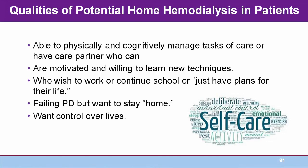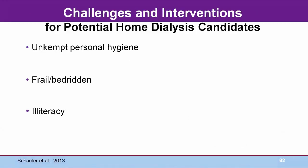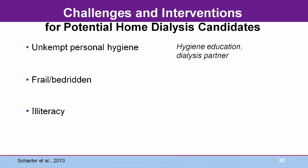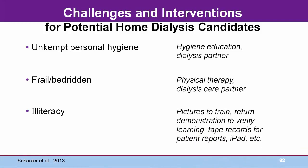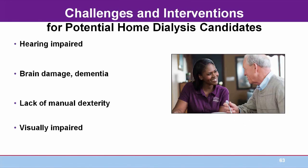Potential quality of life benefits of self-care include being able to physically and cognitively manage tasks of care, being motivated to learn new techniques, wanting to work or continue school, failing PD but wanting to stay home, and wanting control over their lives. However, there still may be challenges including having a dialysis care partner, infection prevention through careful personal hygiene, physical therapy for the frail patient, and ongoing support with extra tools to train the illiterate patient — all of which can be overcome with a home care partner and technology.